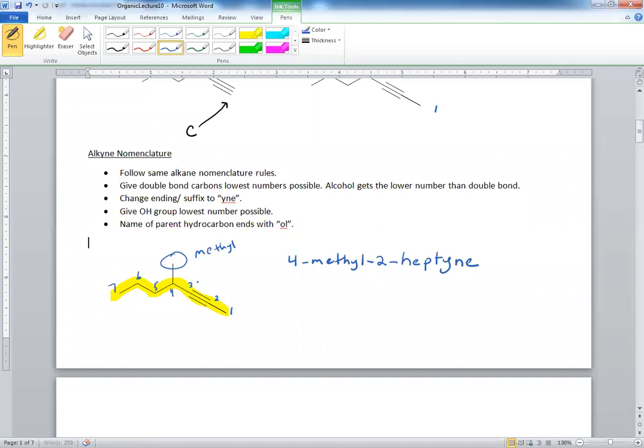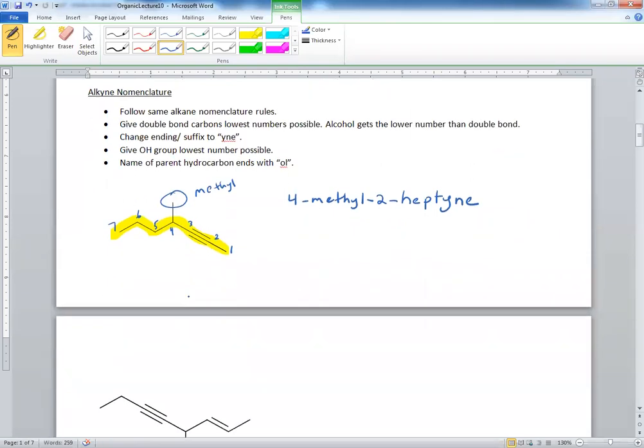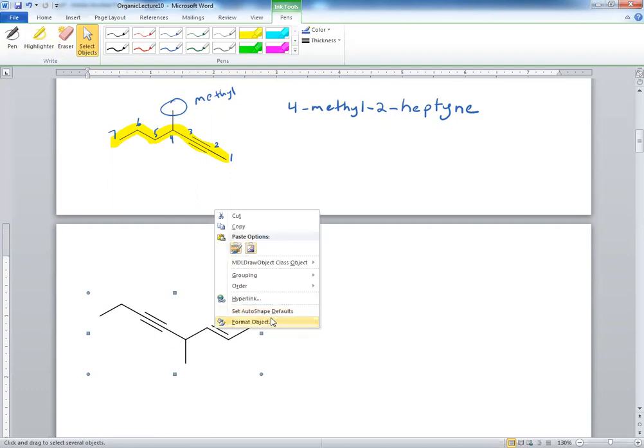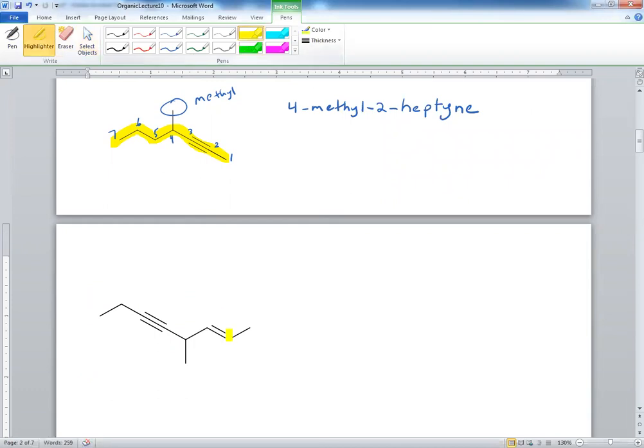4-methyl. And the second one, you have to be aware of this. You have to actually number starting from the double bond, but the ending of the name, the parent hydrocarbon, is still an alkyne. I realize it's a bit confusing, so we go 1, 2, all the way like that.